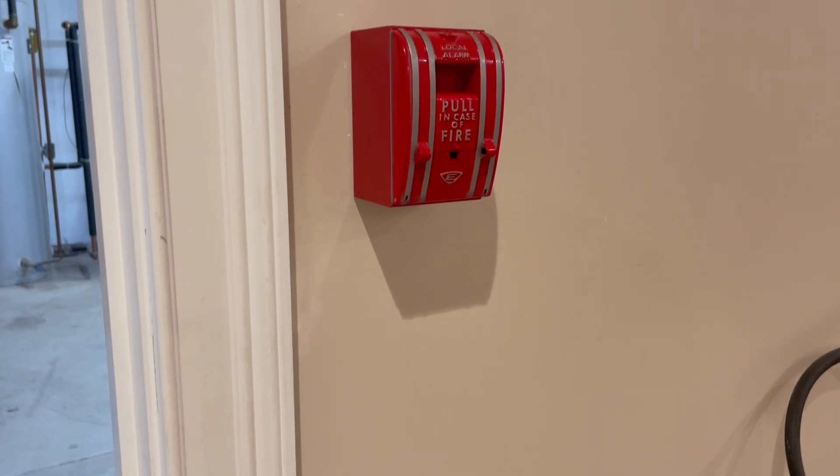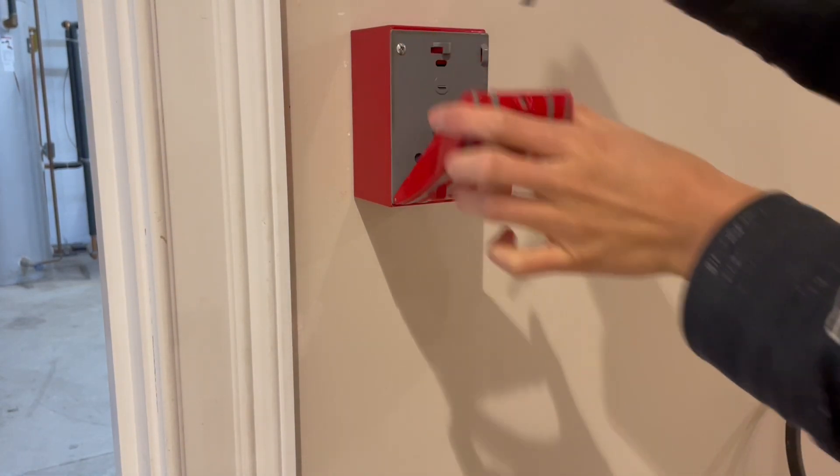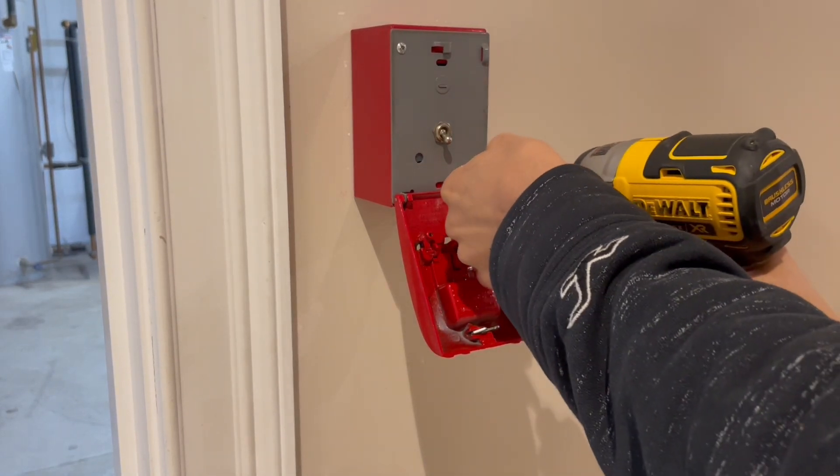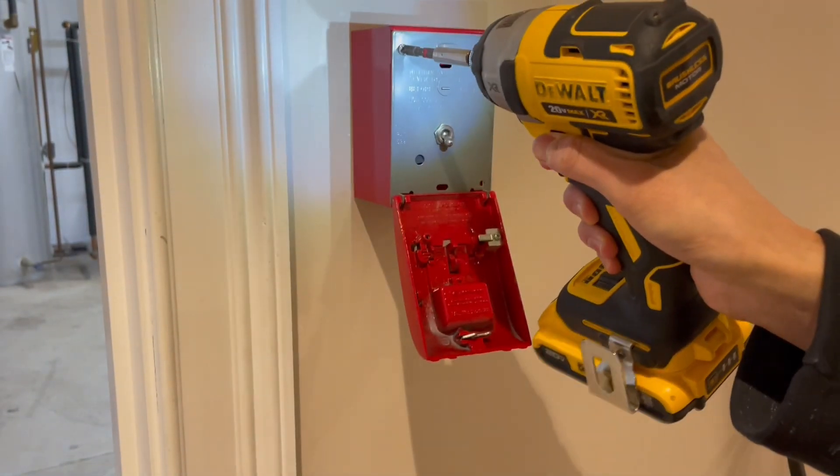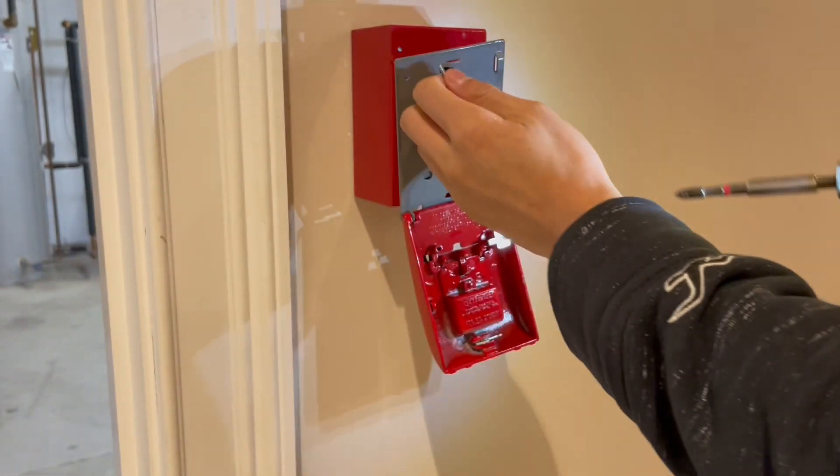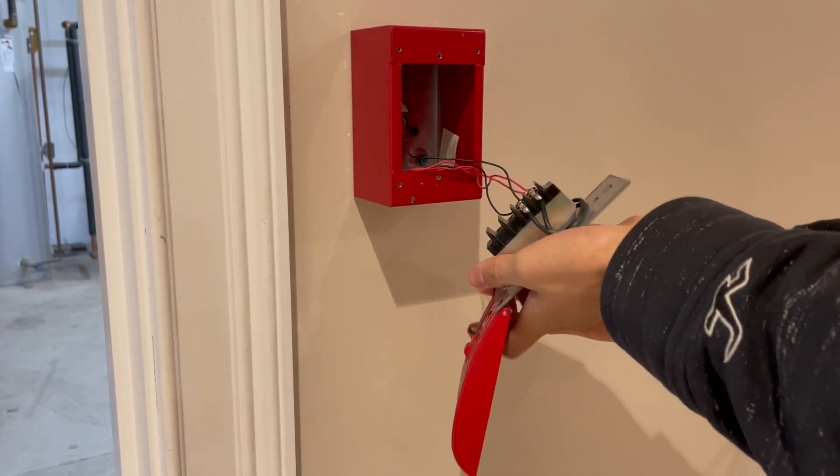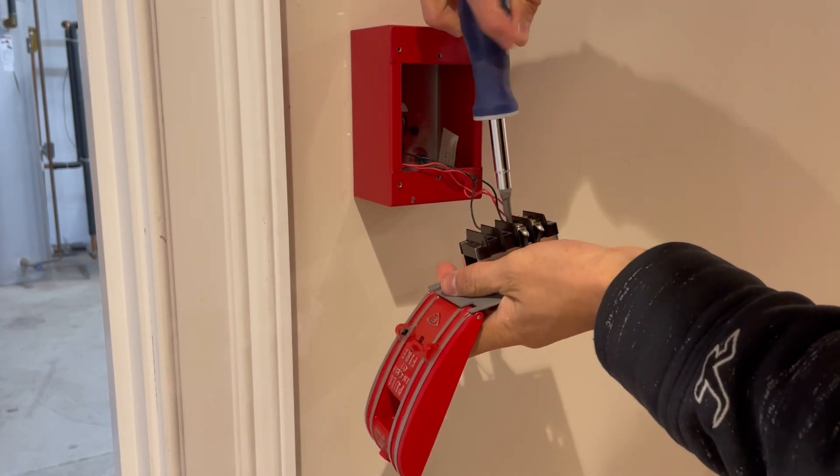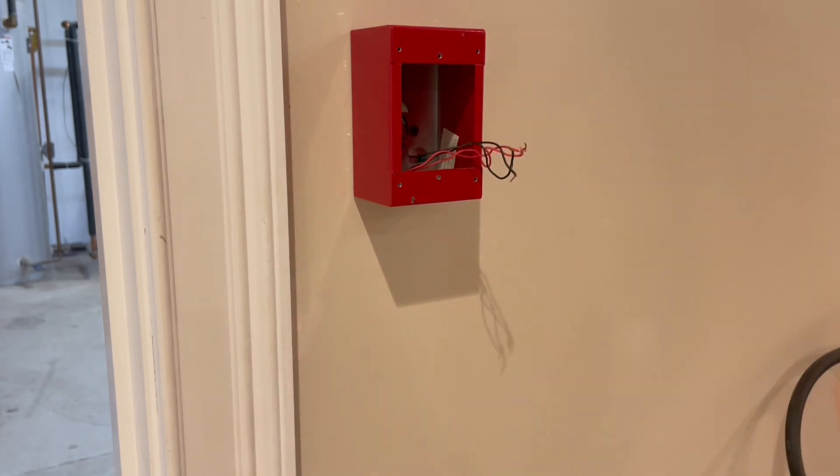Now I'm going to replace this pull station. You open it at the top with a small flathead screwdriver. Just turn it counterclockwise, and then there's two screws like pretty much every other device. So I'll just remove those, and that exposes the wires behind the device. So you just pull it out like this. You can take your flathead screwdriver once again and release these terminals like so. Pull that out, and there you go.